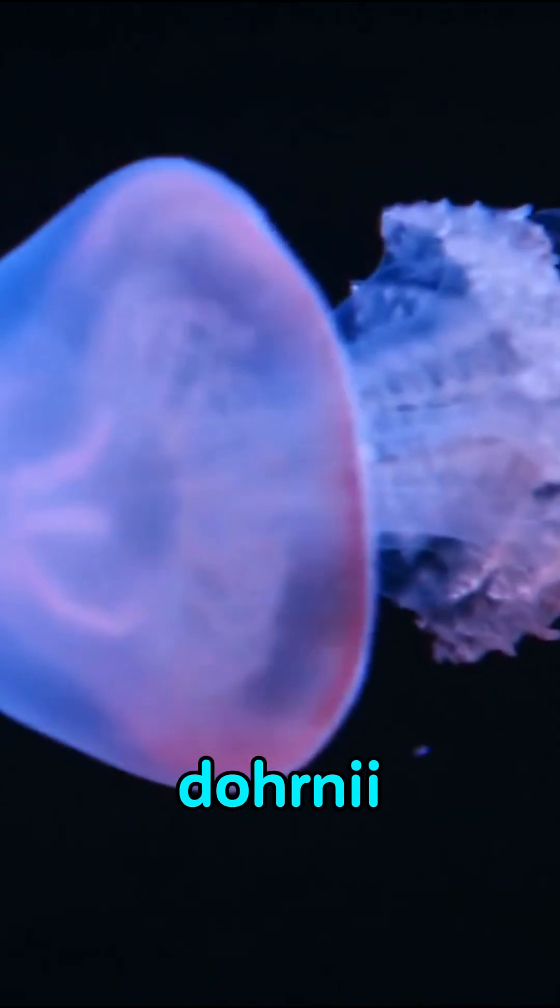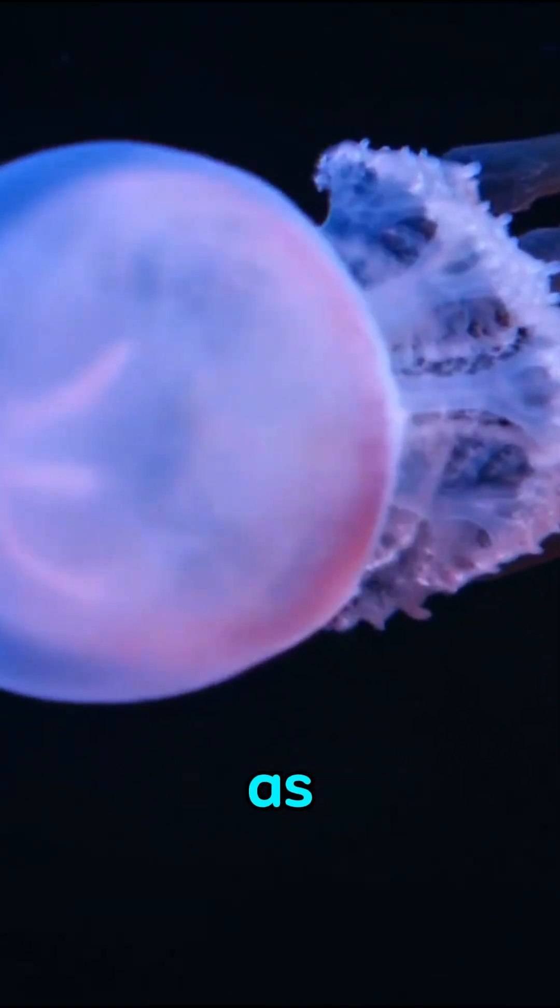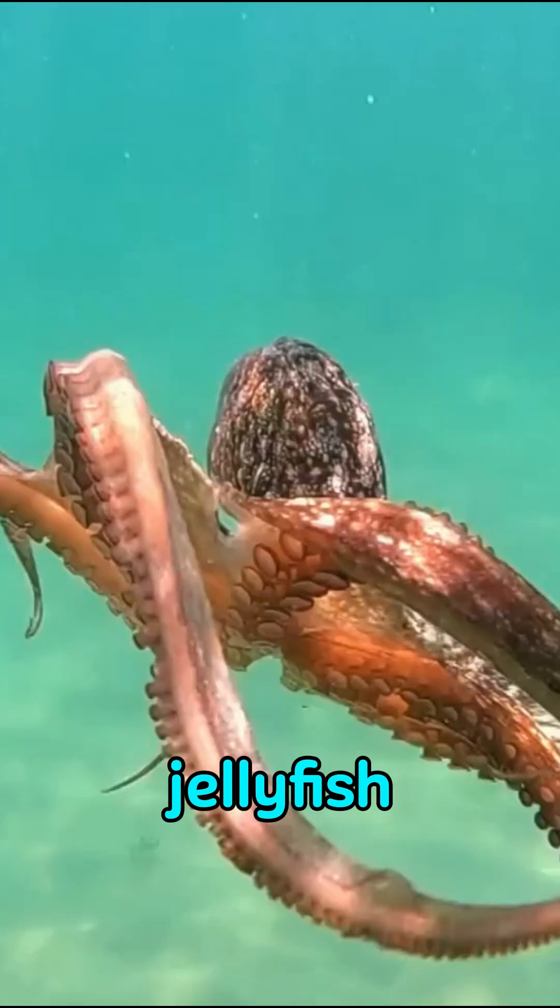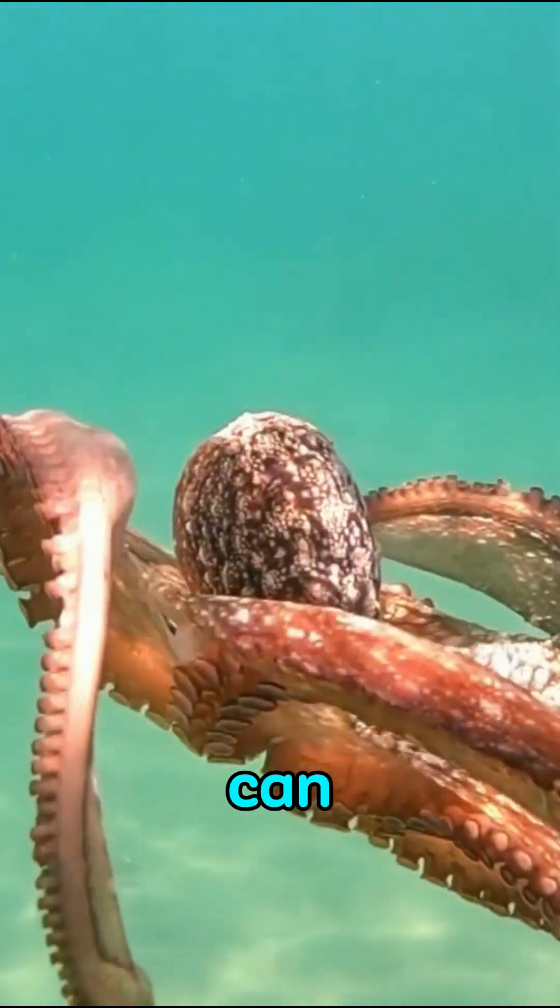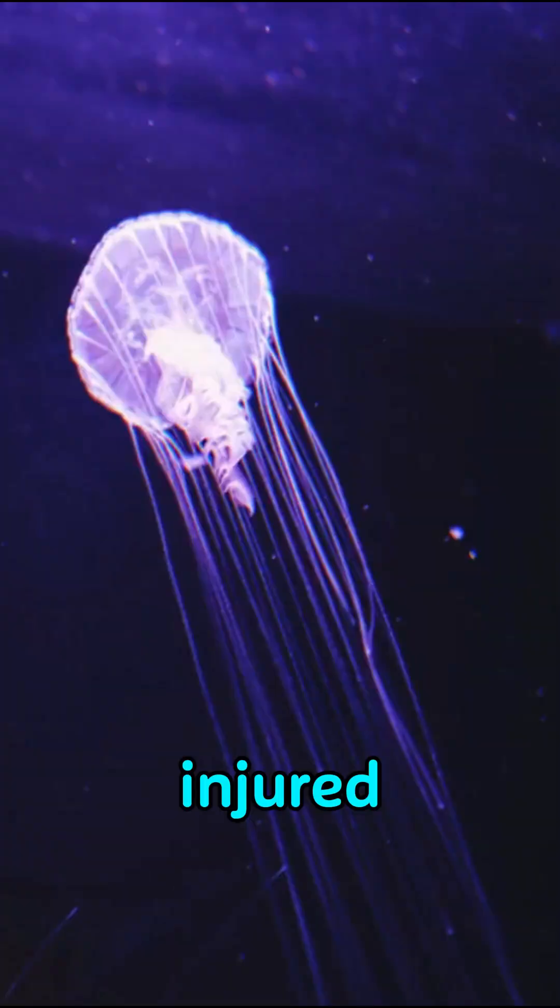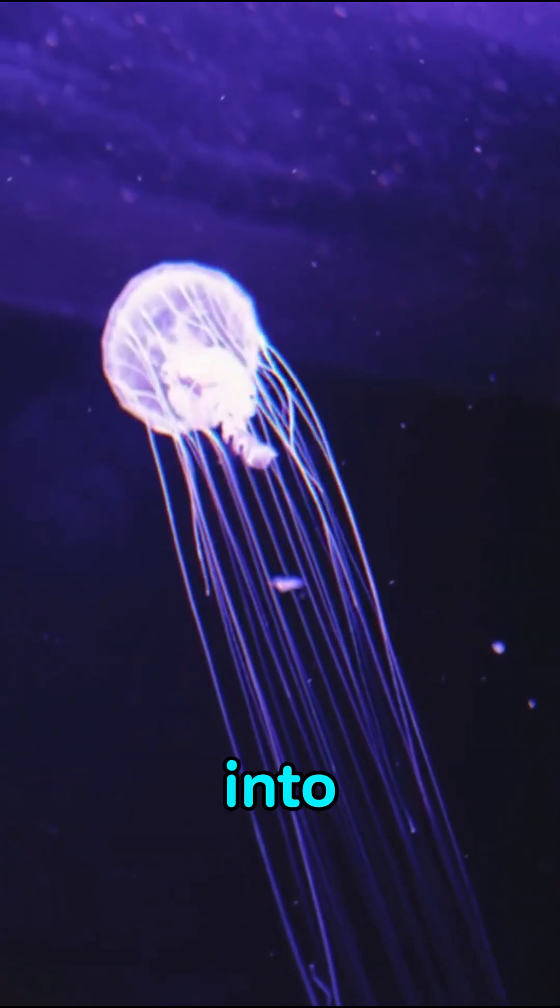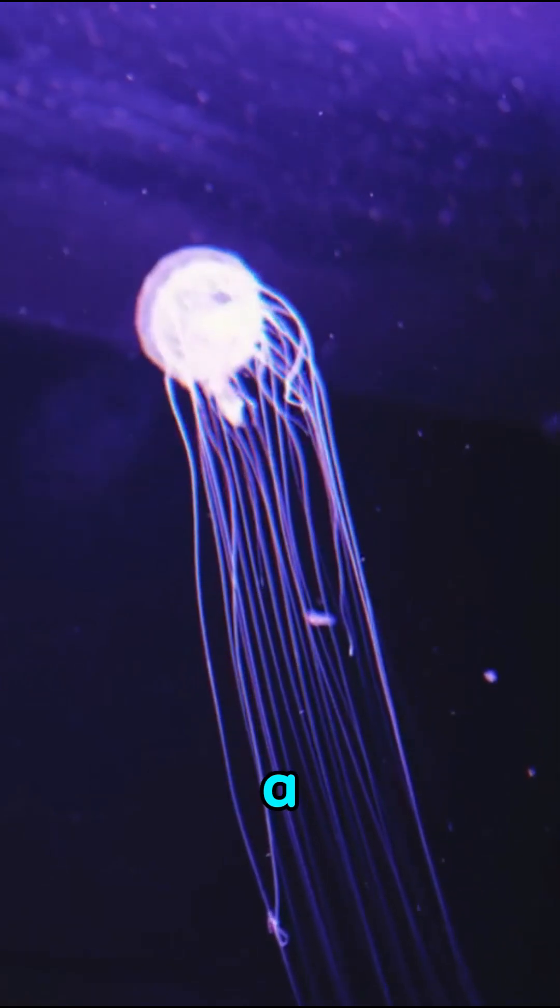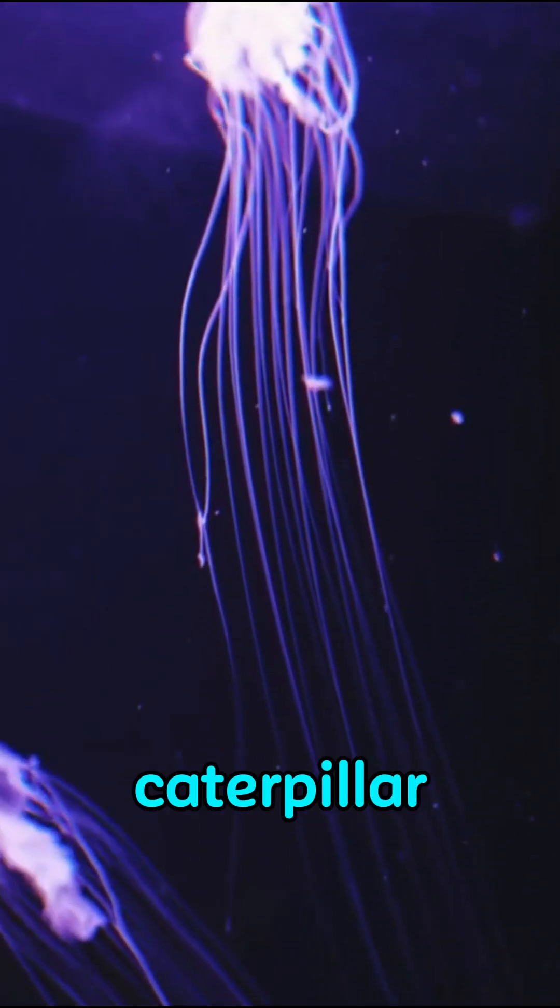Meet Turritopsis dohrnii, the tiny jellyfish known as the immortal jellyfish. This remarkable creature can actually reverse its aging process when stressed or injured, transforming back into its polyp stage, like a butterfly turning back into a caterpillar.